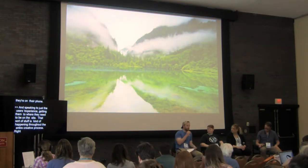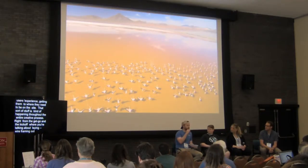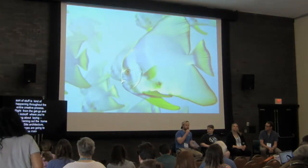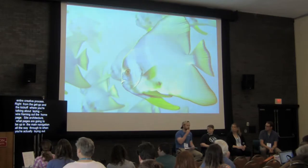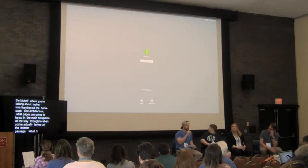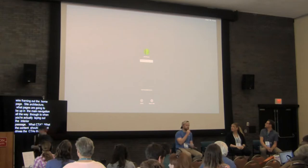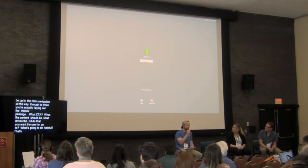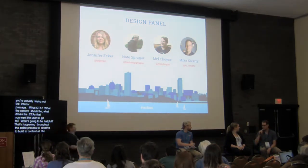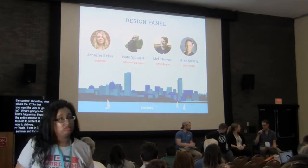Speaking to the user's experience and getting them where they need to be on the site — that's happening throughout the entire creative process. Right from kickoff, you're talking about wireframing, site architecture, and what pages are in the main navigation. All the way through to when you're actually laying out interior pages: what CTAs are on this page, where should they be, what content drives users to those CTAs, what sorts of links are going to be helpful. That happens throughout the entire process, from creative to build to content delivery.